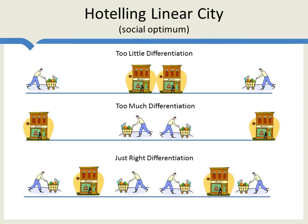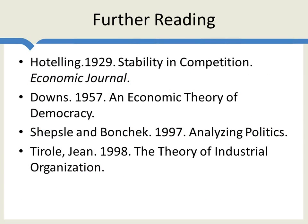Notice that in this model, we do not have an invisible hand result — we could have too little or too much differentiation, and just-right differentiation would be by accident. There are no forces necessarily pushing stores to the social optimum. It's not clear what the policy should be or whether it's even a big problem, but it is worthwhile pointing out that there's no invisible hand result in the Hotelling linear city model. For further reading, see Hotelling's original article, Downs' book, Shepsle and Bonacek's textbook on politics using the median voter theorem, and Jean Tirole's The Theory of Industrial Organization.